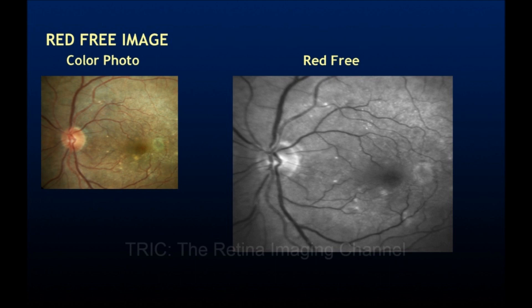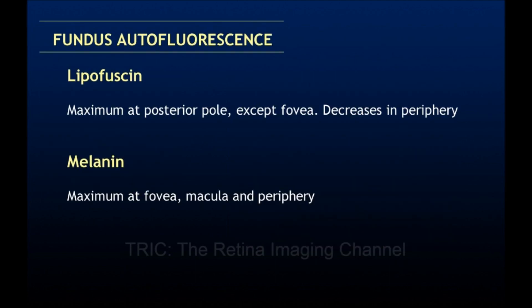The next set of black and white images are autofluorescence images. Autofluorescence imaging is based on the topographic distribution of different fluorophore molecules in the fundus. There are many such molecules; however, in clinical practice, lipofuscin and melanin are most commonly studied.